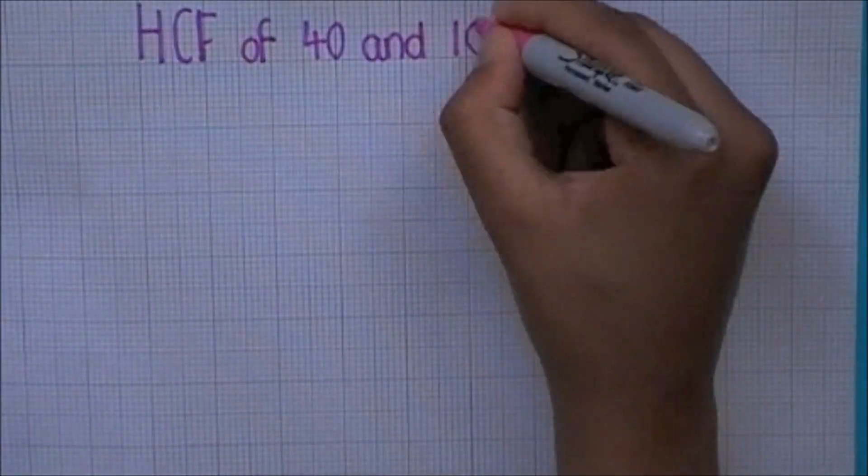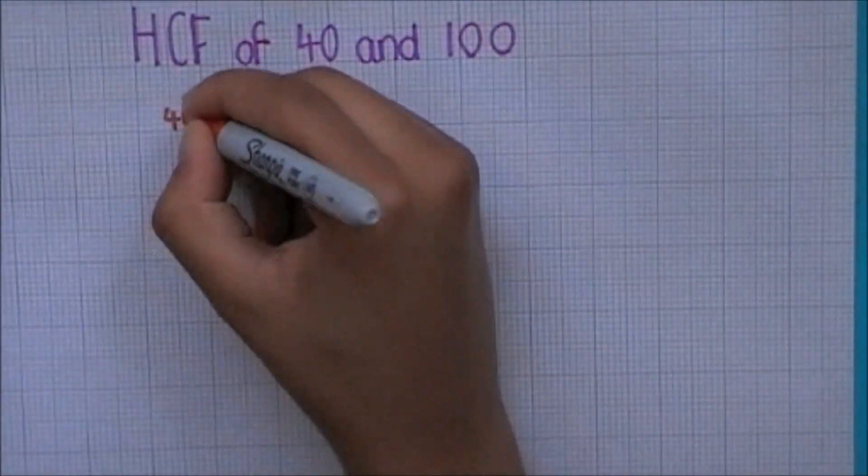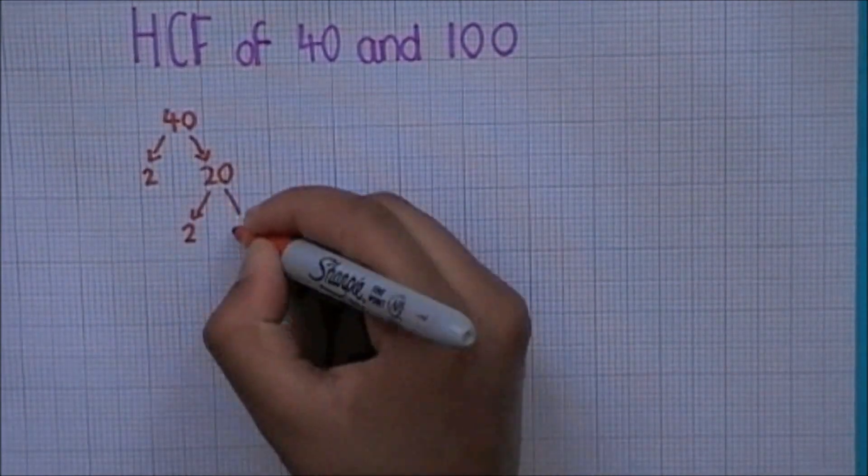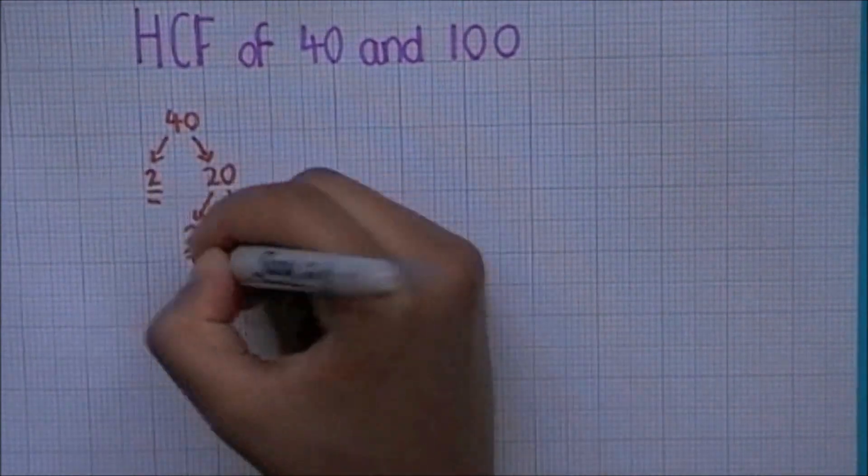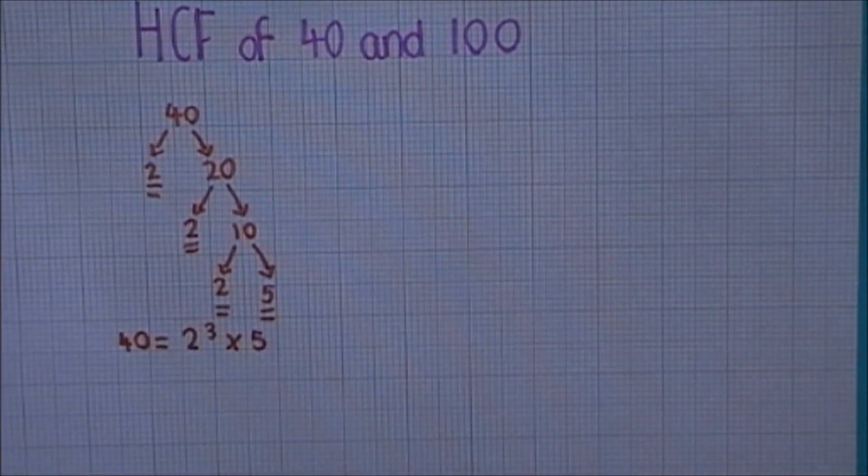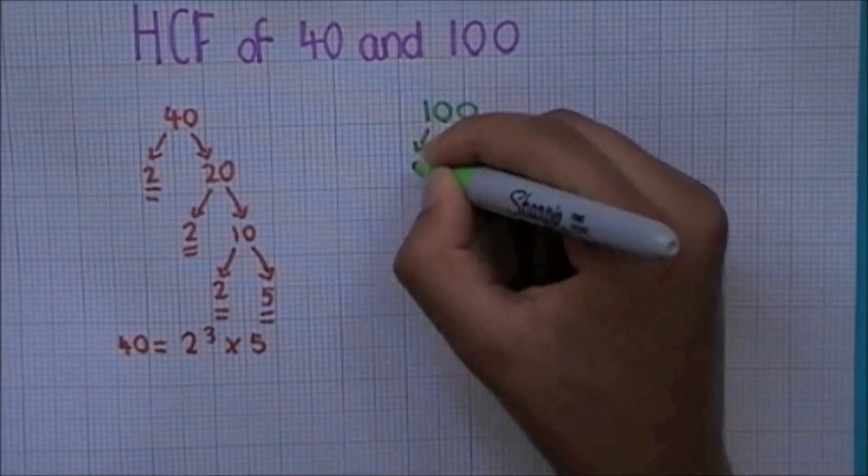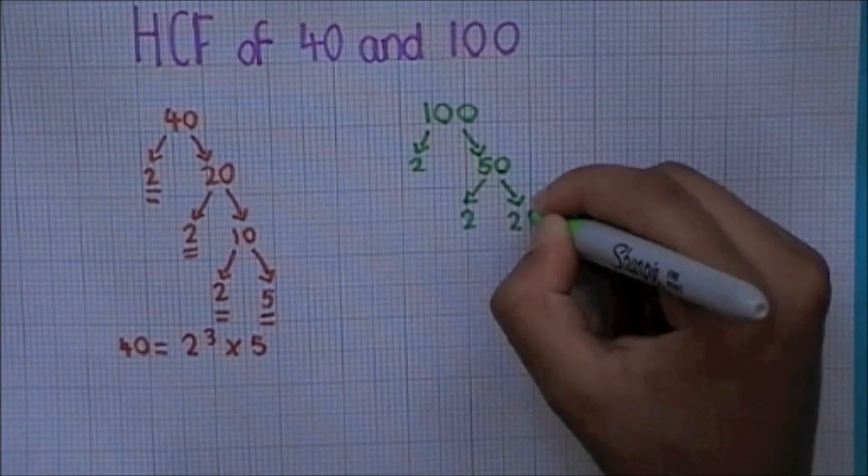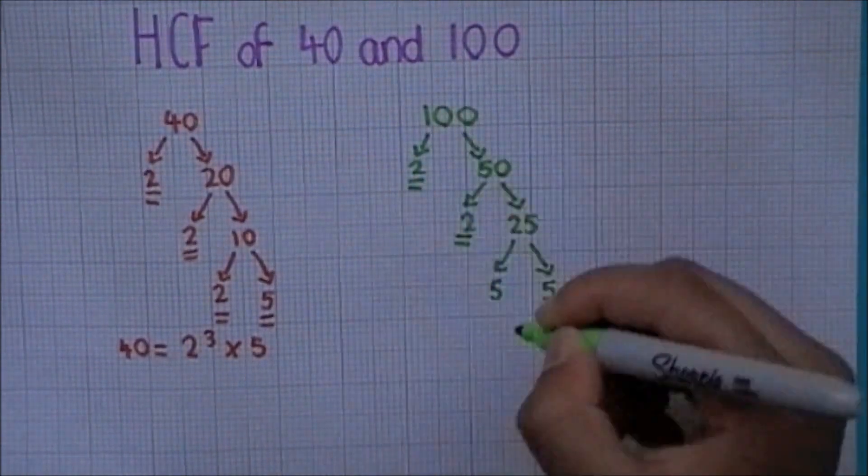Hmm, how about we try using a factor tree to find the HCF of 40 and 100 instead? We must split up 40 to its prime factors first, using the same method as before, until we're left with an answer written out as shown. Then, the same method again with 100, until we get an answer written out as shown.